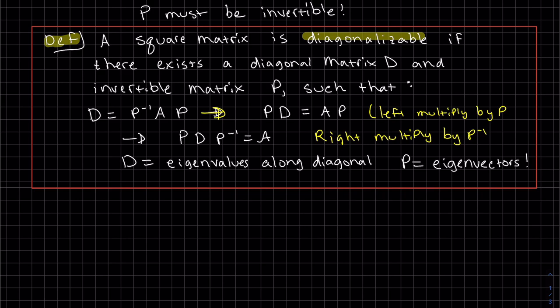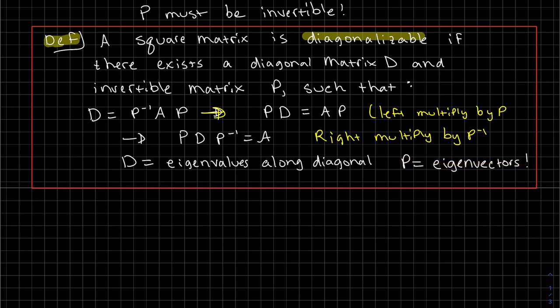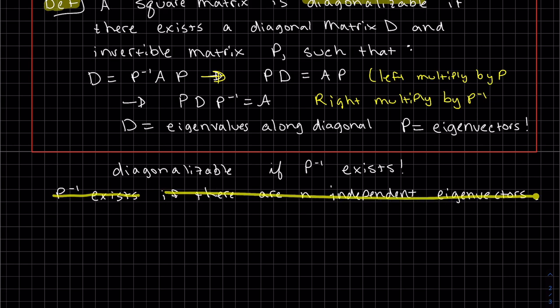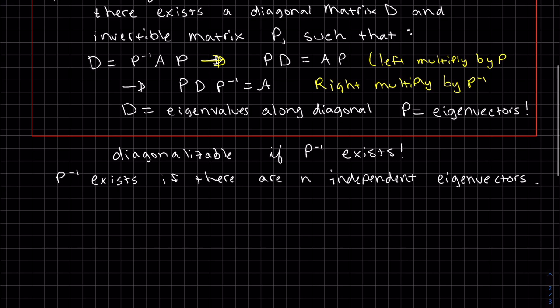So to make this happen, we just make D my eigenvalues along the diagonal, and you make P by putting in the eigenvectors. So this is diagonalizable if P inverse exists. So P inverse exists if there are N independent eigenvectors.